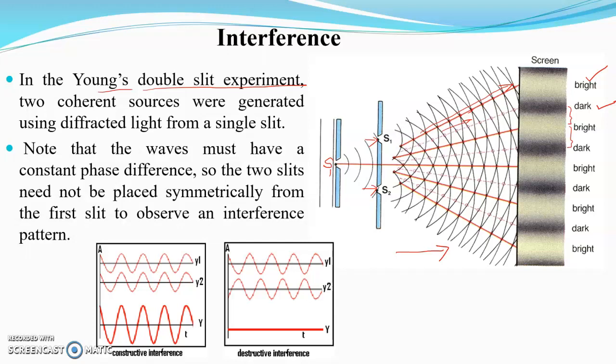The appearance of these bright and dark fringes is due to the interference of light. The bright bands are made by constructive interference of the two waves. In constructive interference, the wavelengths of the two waves are exactly matching, so the resultant will be a double amplitude wave. That means the brightness will be double in that region, which is why we get a bright fringe on the screen.